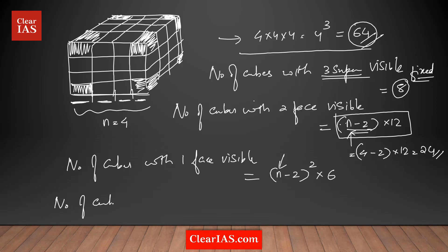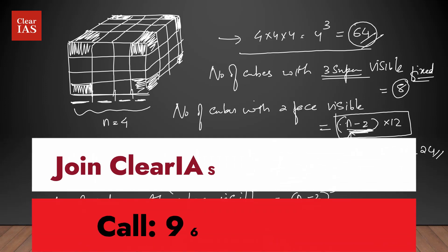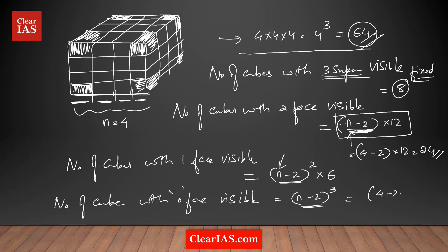You can also find the number of cubes with 0 faces visible — the ones hidden inside that we cannot see. The formula is (n − 2) cubed. Notice the pattern: 3 faces uses (n−2), 2 faces uses (n−2) squared, 1 face uses (n−2) squared times 6, and 0 faces uses (n−2) cubed. With n = 4: (4 − 2)³ = 2³ = 8 cubes are invisible, meaning 8 cubes have 0 faces visible.